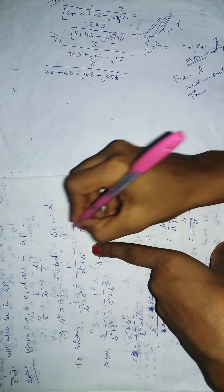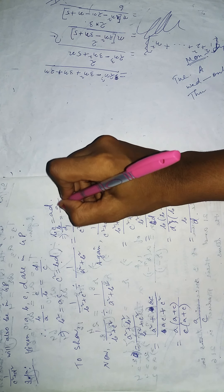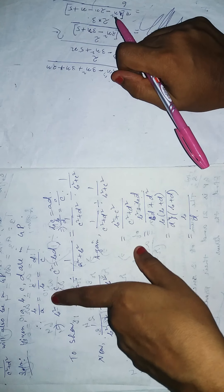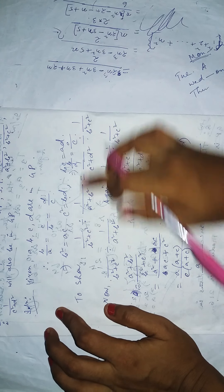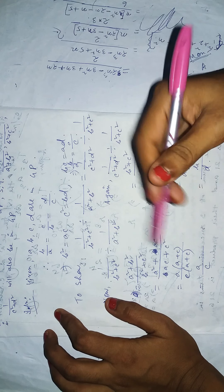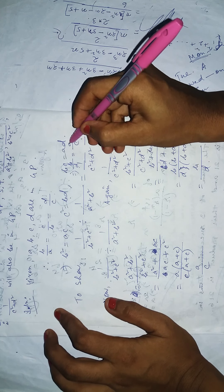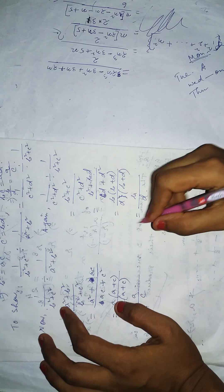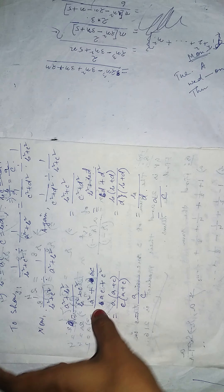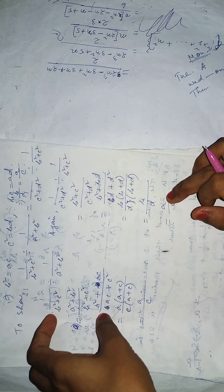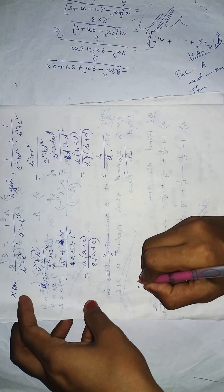From the statement bc = ad, we get b/d = a/c. We had derived this equation earlier. Applying this last equation: in place of b/d, write a/c. So by applying this formula, the right hand side also gives a/c.